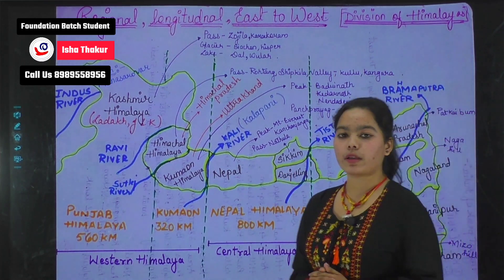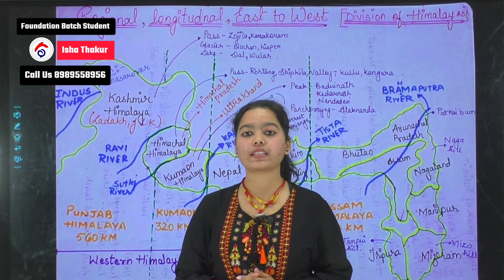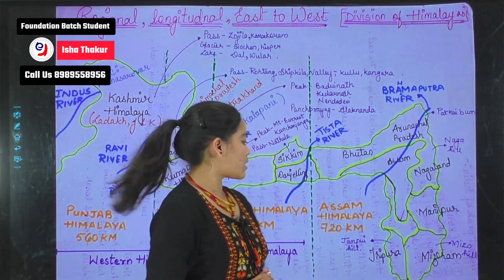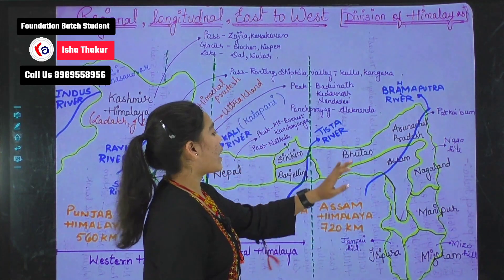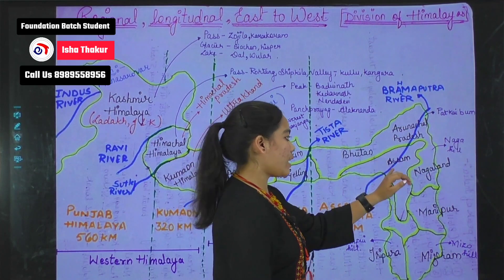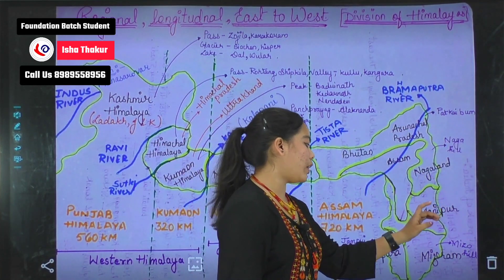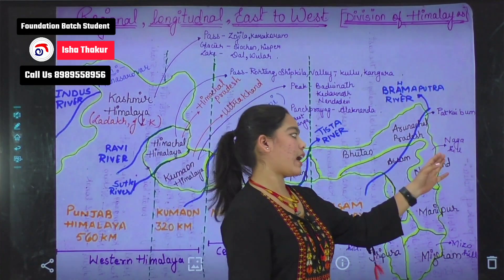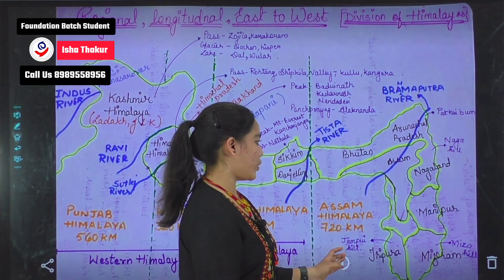Coming on to Assam Himalaya. Assam Himalaya is subdivided into two parts: Assam Himalaya and Purvanchal Himalaya. Assam Himalaya is 720 km and consists of Bhutan, Arunachal Pradesh, and Assam. Purvanchal Himalayas consists of Nagaland, Manipur, Mizoram, and Tripura. Nagaland has Naga Hills, Mizoram has Mizo Hills, and Tripura has Jampui Hill.